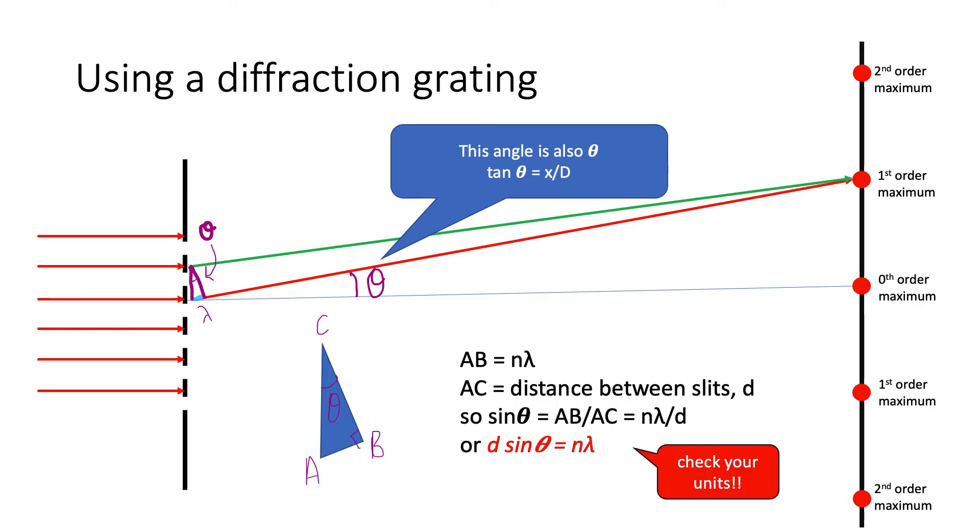Something to be aware of when you're doing this calculation is to make sure you've got SI units. In order to get the wavelength to come out in meters, or it'll be a small fraction of a meter, you need to make sure that the units you put in are correct. You will be measuring probably in centimetres or millimetres. You must ensure that is converted to meters when you do the calculation, or you won't get the right answer.